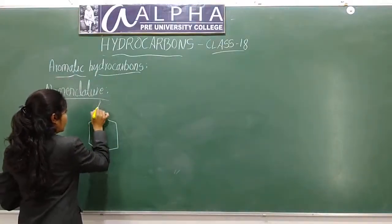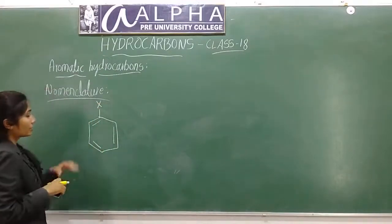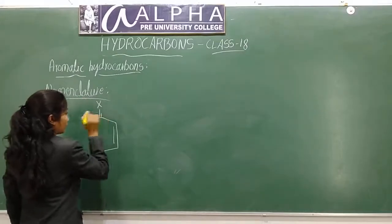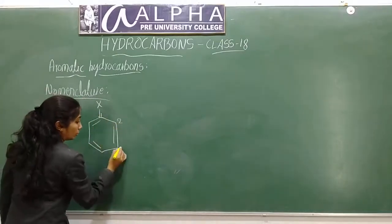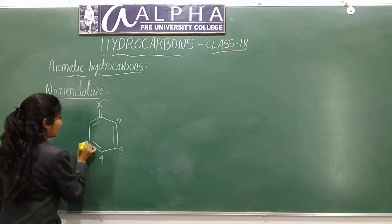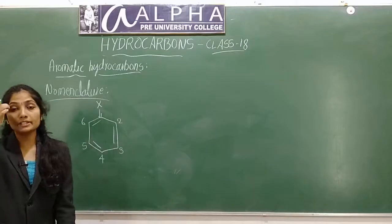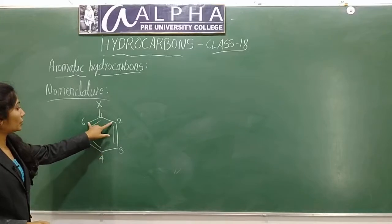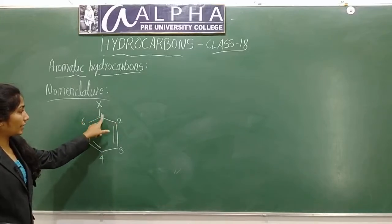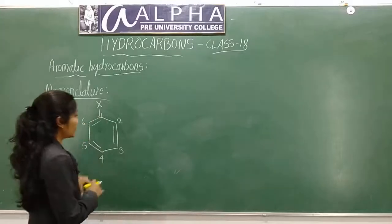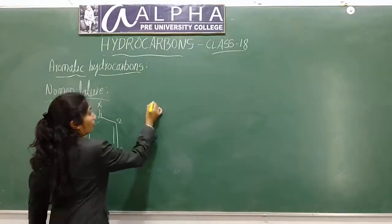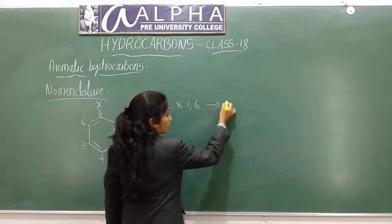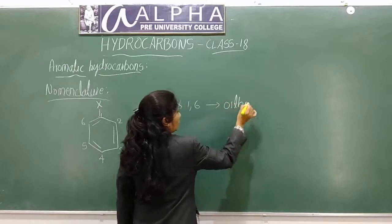I have substituted an atom X at one position of the benzene ring. That becomes the first position. The benzene ring has six carbon atoms numbered 1 through 6. I have three possible positions for a second substituent. Positions 1,2 and 1,6 — very next to the substituted position — are called ortho positions.